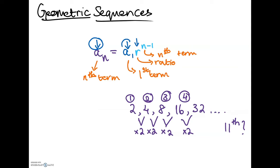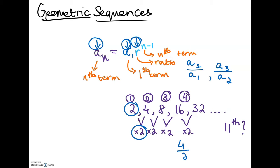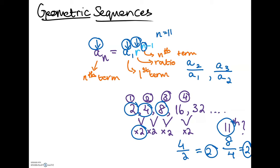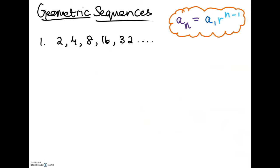a sub 1 is going to be your first term, so whatever the first term of your sequence is, that's a of 1 — in this case it's 2. r is the ratio: it's the second term divided by the first term, or the third term divided by the second term — you're finding the common ratio being multiplied. In this case the ratio is 2, because 4 divided by 2 is 2, and 8 divided by 4 is 2. n is just going to be which term we're solving for, so if you want to find the 11th term you substitute n equals 11.